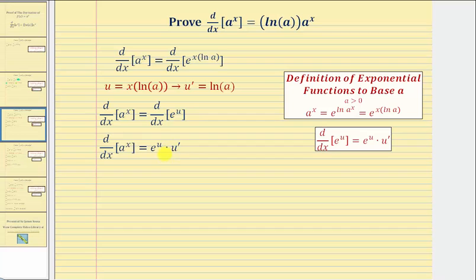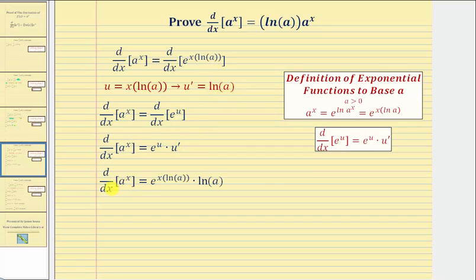For the next step, we'll perform substitution for u and u prime, where u is equal to x times natural log a, and u prime is equal to natural log a. So now we have the derivative of a raised to the power of x with respect to x equals e raised to the power of x times natural log a, which is equal to a to the x.